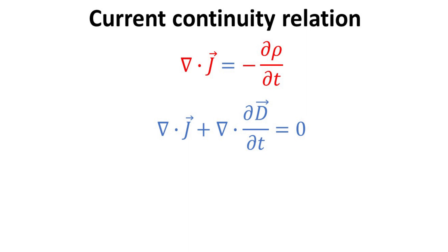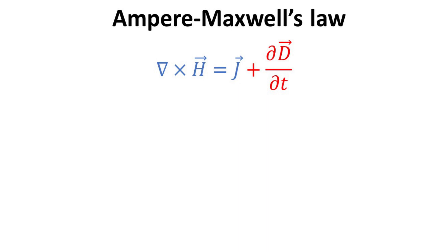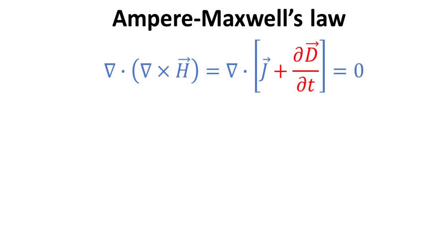Per the electric Gauss's law, the charge density rho can be expressed as the divergence of the electric flux density, which allows us to write the continuity equation as a sum of the divergence of the charge current with the divergence of the so-called electric displacement current. The electric flux density D is often also called the electric displacement, thus the terminology. Charge current continuity requires the charge current to be accompanied by the displacement current, so Maxwell fixed the original Ampere's equation by adding the displacement current to the charge current.